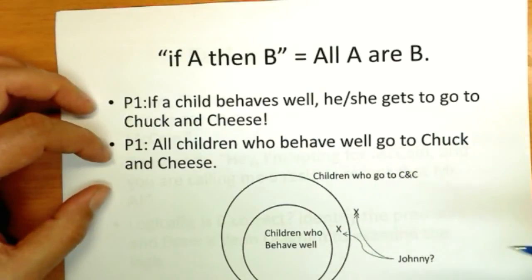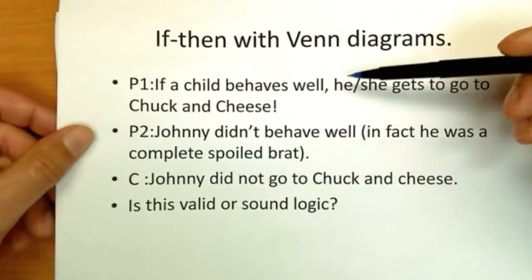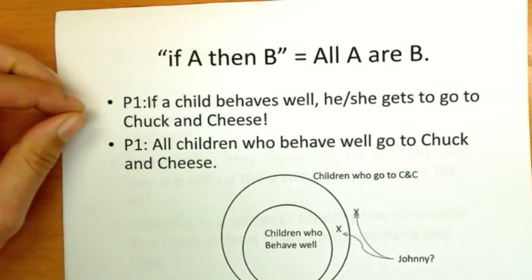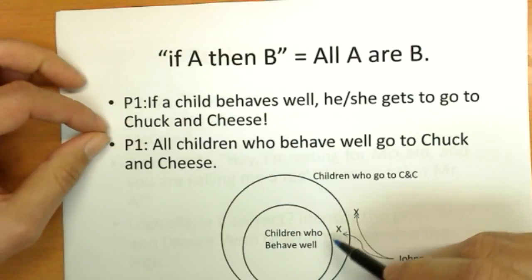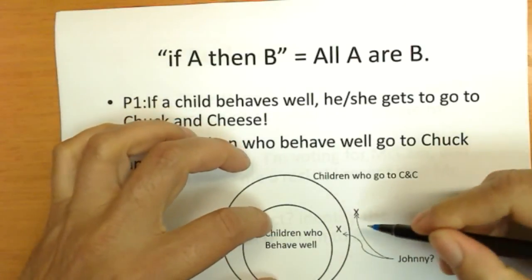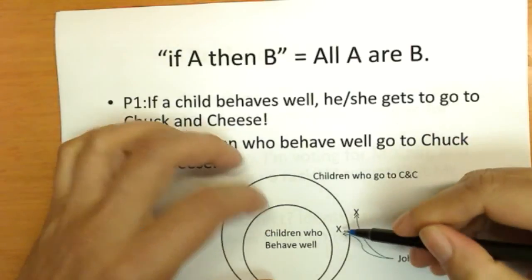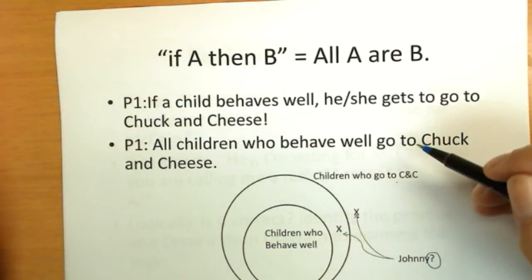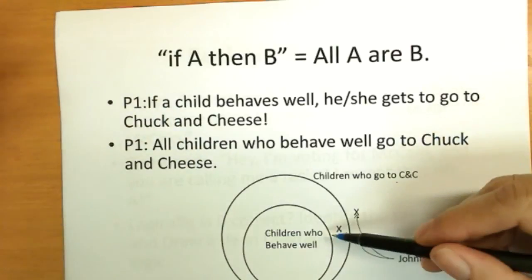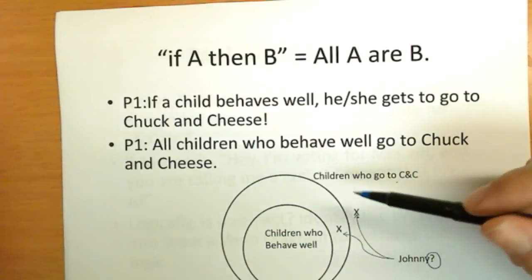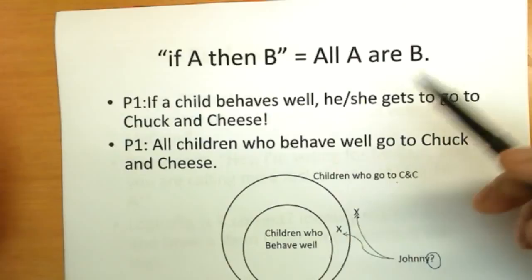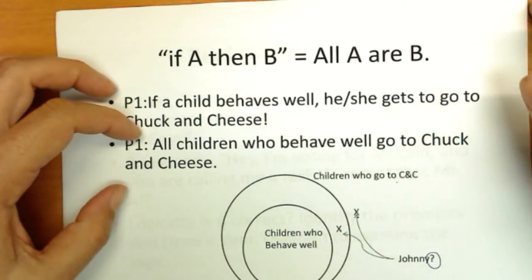And to finally answer the question, what about Johnny? What were we told about Johnny? We know if he behaves well, he gets to go to Chuck and Cheese. Johnny didn't behave well, he was a brat. So he's not inside behaving well. Well, not inside behaving well means you're outside of this little circle. But you could be outside of it two different ways. And that's why I have a question mark here. You could be outside of it while still being inside the group that go to Chuck and Cheese, or while being outside. So you cannot conclude, just because he didn't behave well, he didn't get to go to Chuck and Cheese. All you know is that if he behaved well, he did go. You don't know what happens when he doesn't behave well, when that if condition isn't met. So the logic is invalid and unsound.